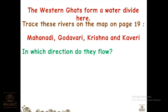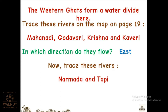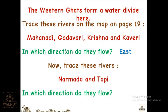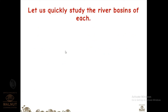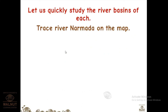Today we are going to see the peninsular rivers. The major ones are Mahanadi, Godavari, Krishna, and Kaveri. Once I open the map you will see the directions they flow — they flow to the east. Narmada and Tapi flow to the west.